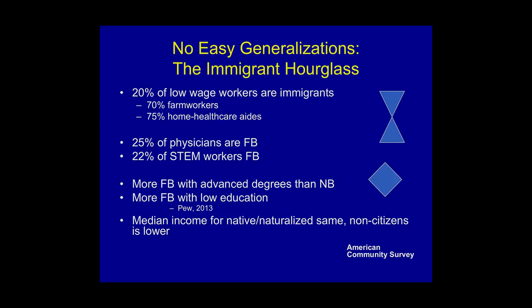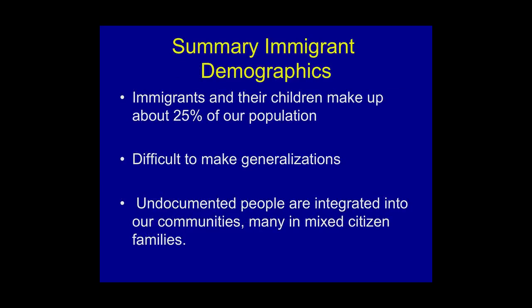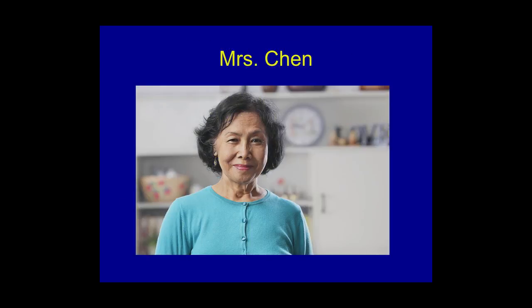In summary, about 25% of our population are either foreign-born or their children. It is very difficult to make generalizations, and undocumented people are integrated into our communities.